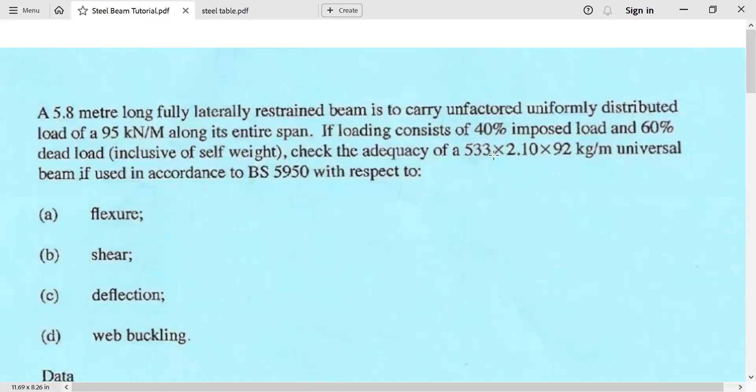The question is a 5.8 meter long fully laterally restrained beam is to carry unfactored uniformly distributed load of 95 kilonewton per meter along its entire span. If loading consists of 40% imposed load and 60% dead load, inclusive of self-weight,